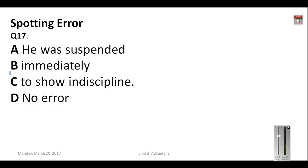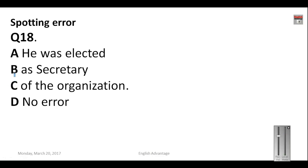Question number seventeen: 'He was suspended immediately to show indiscipline.' When we talk about the cause, we use 'for + ing form' of the verb; when we talk about purpose, we use 'to + V1.' Here we are talking about the cause of suspension. So the correct form is 'for showing indiscipline.' Your answer will be C.